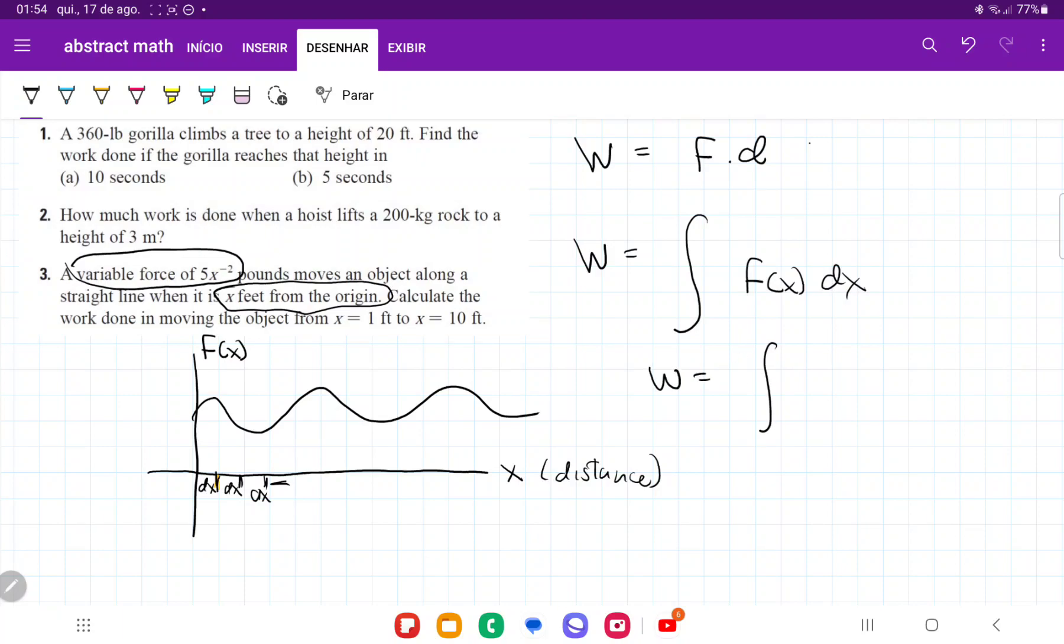So with all this being said, we can say that our work is going to be the integral of our force, which is 5x to the negative 2 dx. And then it's asking us to calculate the work done moving it from 1 to 10. So we're doing from 1 to 10.